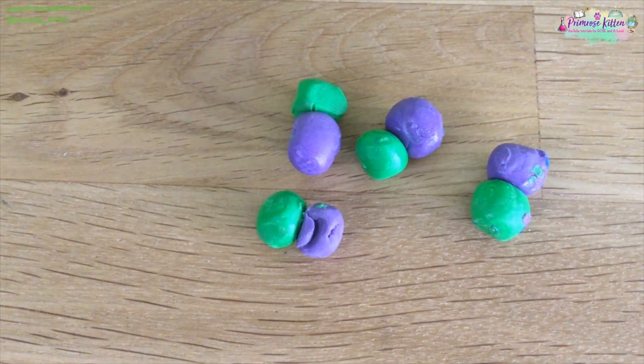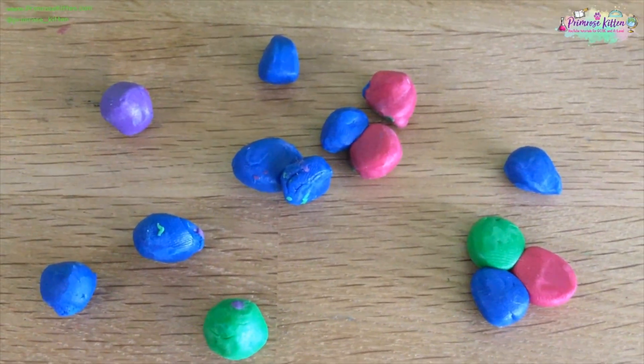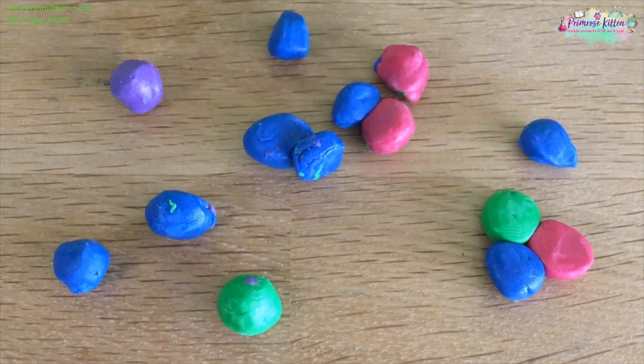Elements are pure things. Compounds are two or more different elements chemically bonded together. Mixtures are lots of different things, some of them chemically bonded, some of them not.